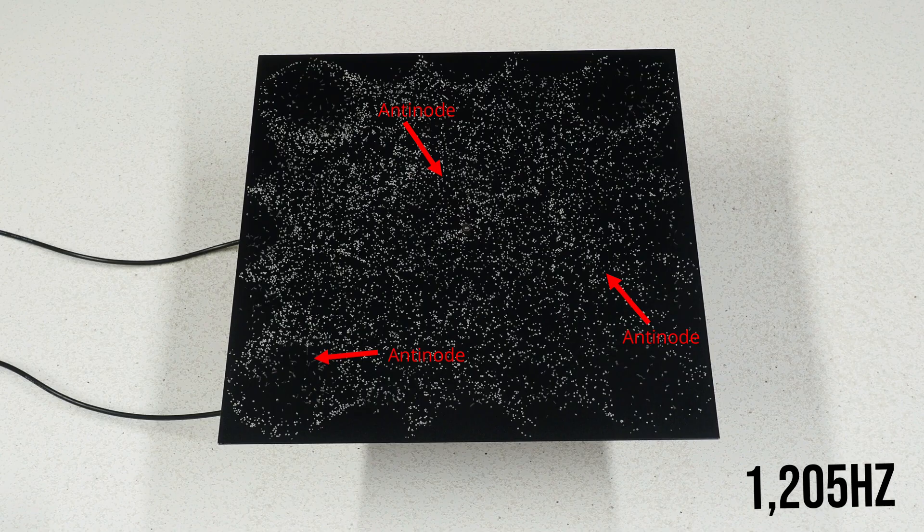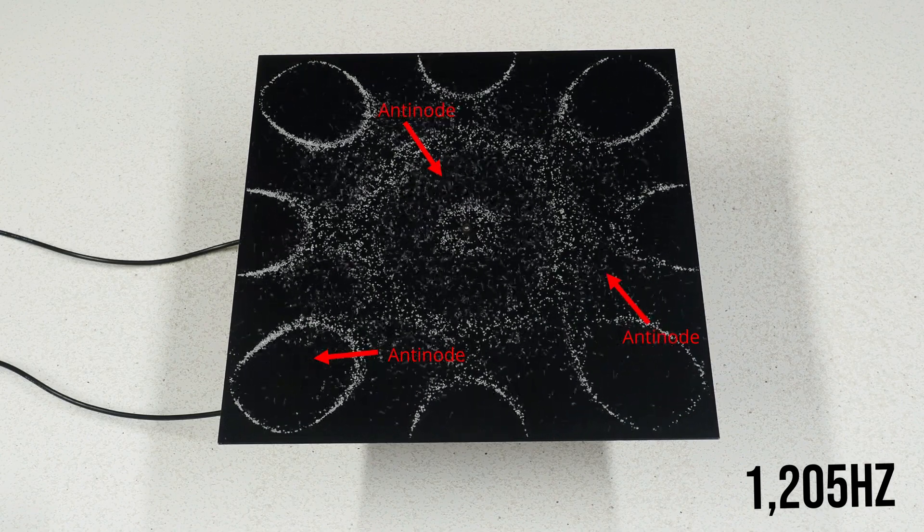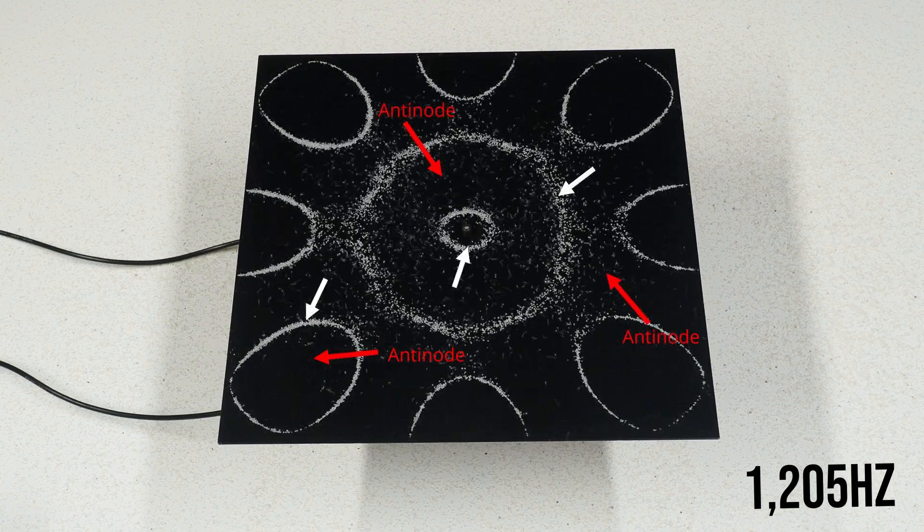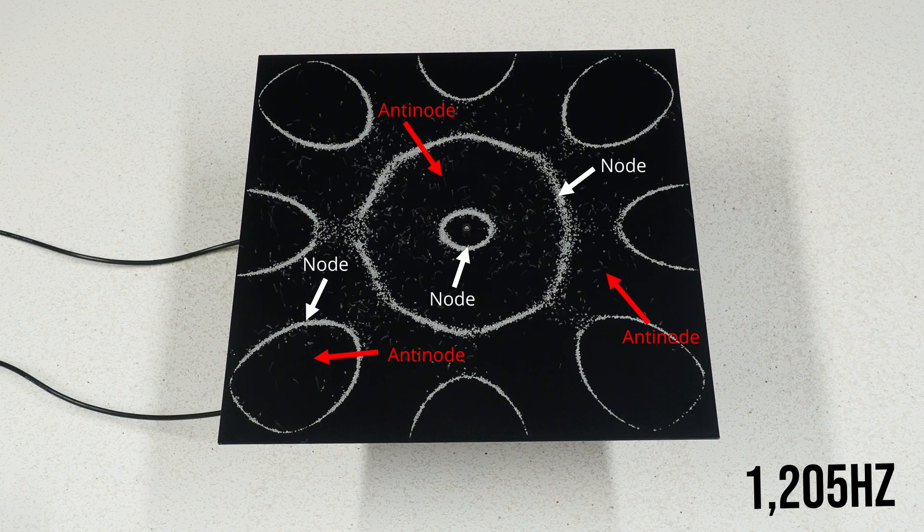When a standing wave is present, the salt will move away from these anti-node locations to parts of the material with less up and down displacement, like the node locations.